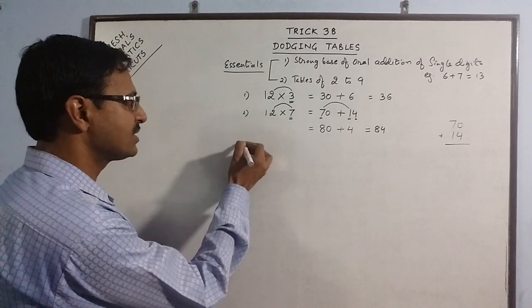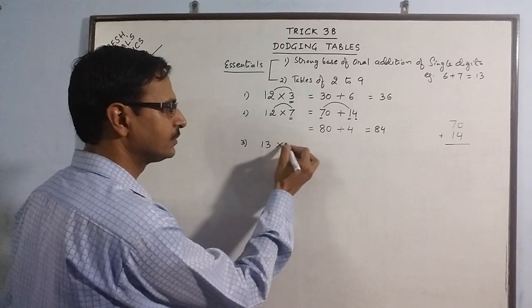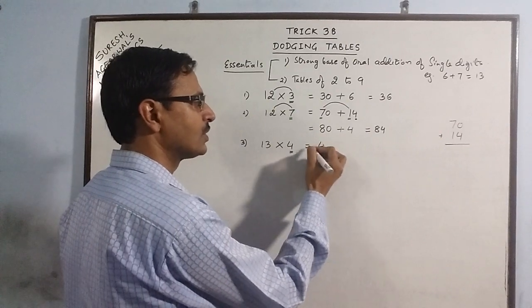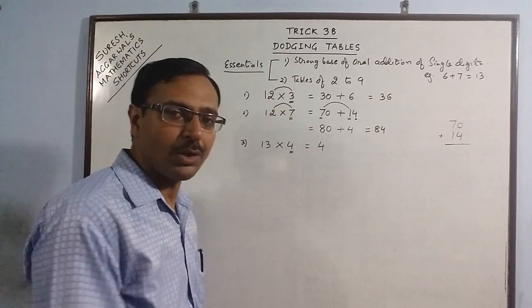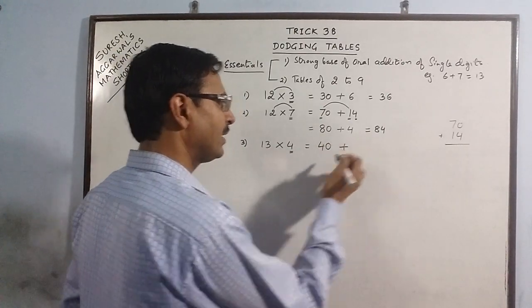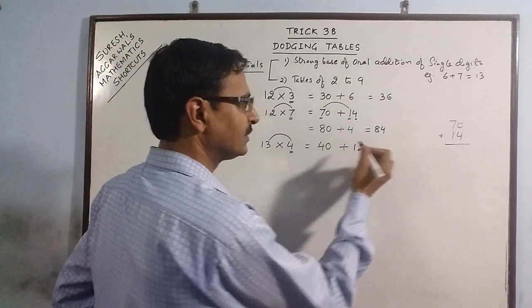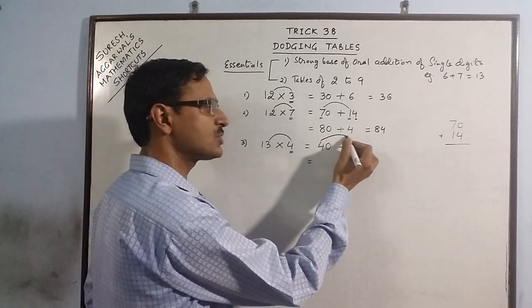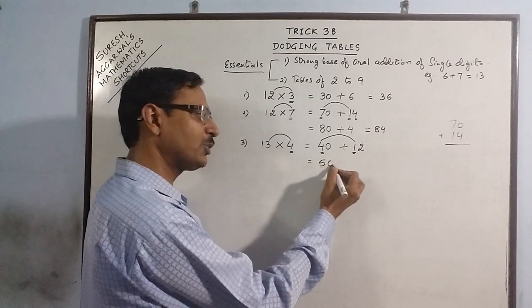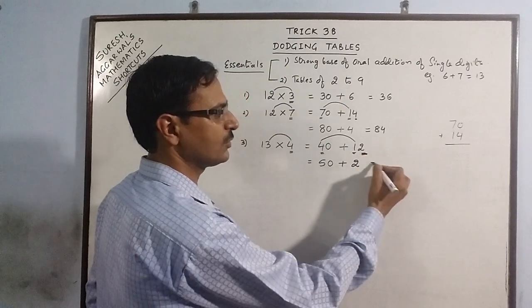If we have 13 multiplied by 4, the child has to be told that this 4 has to be suffixed by a 0, then multiply 4 by 3, that is 12. For adding these, he adds these two tenth places: 5, then puts a 0, then adds this digit 2, giving 52.